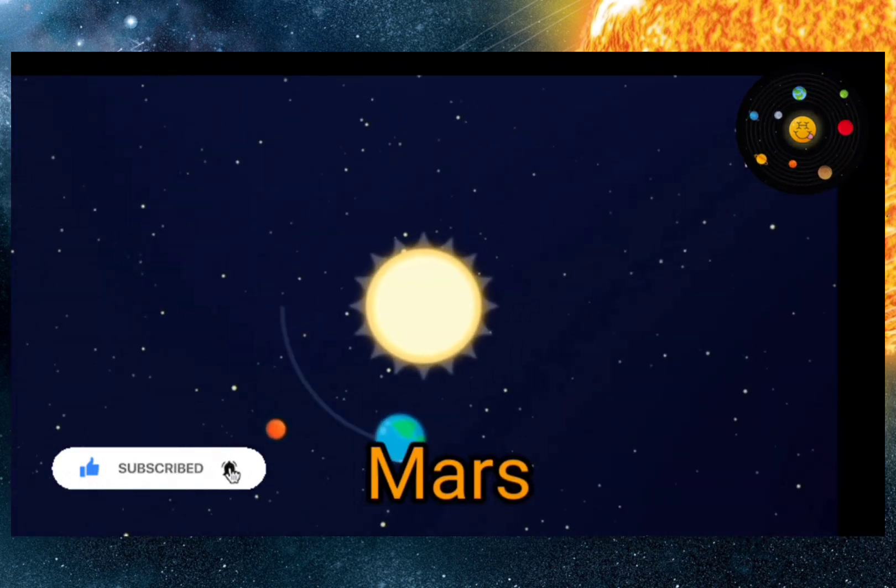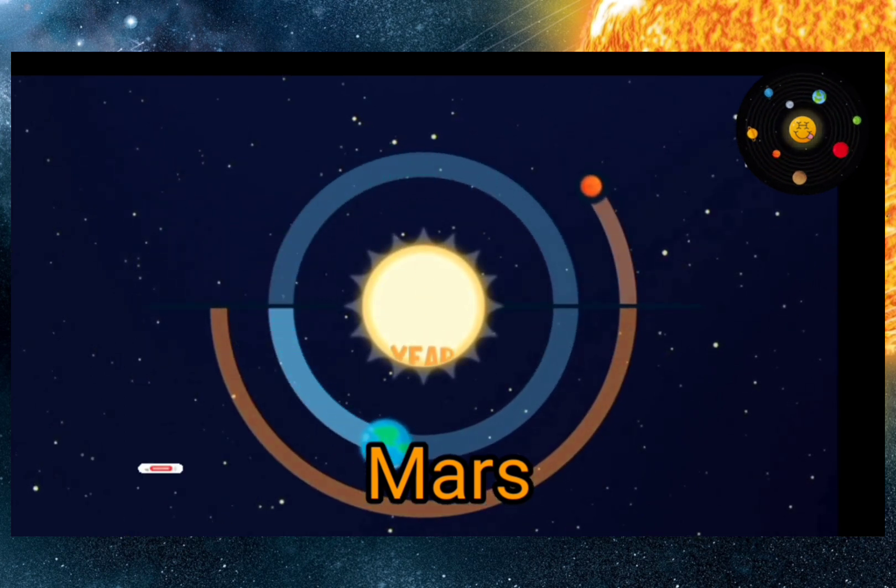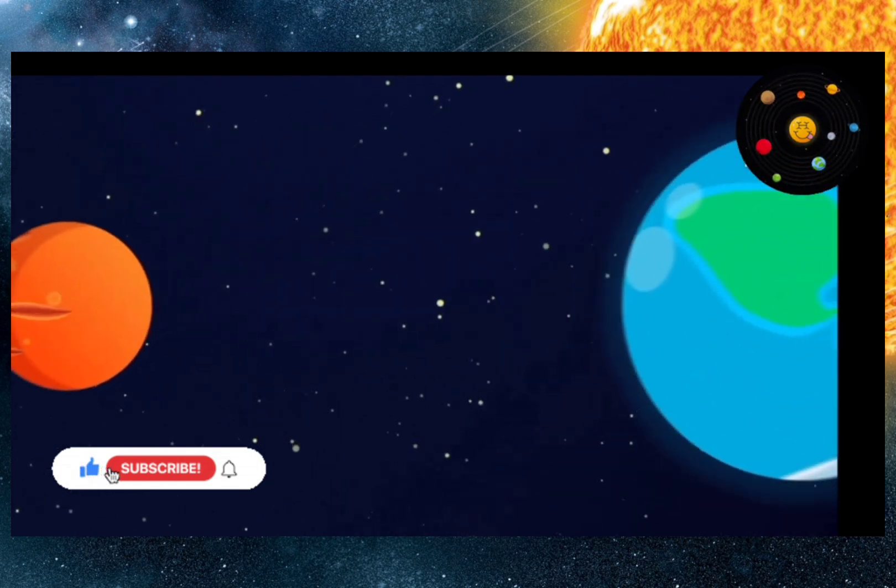Let's meet our closest neighbor, Mars. A Martian year is almost twice as long as on the Earth. That means that it takes Mars twice the time it takes the Earth to go around the Sun.